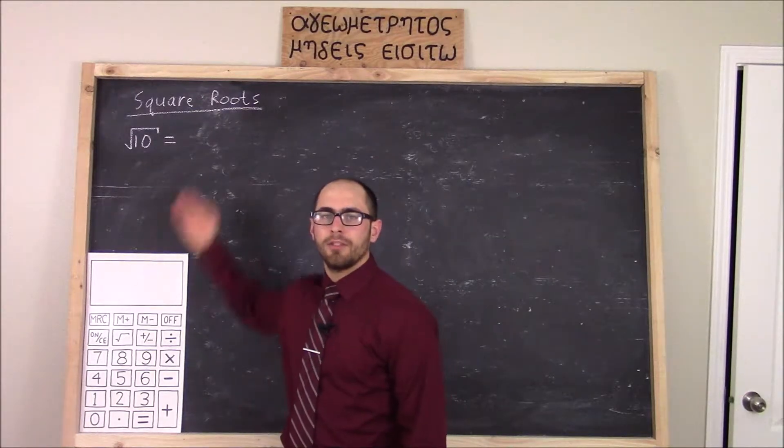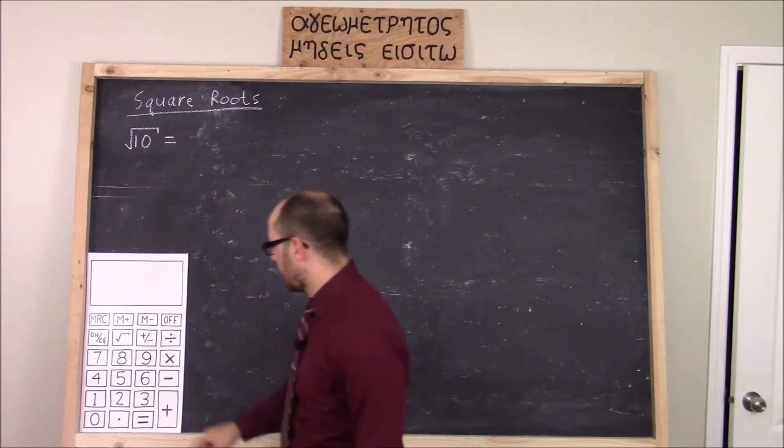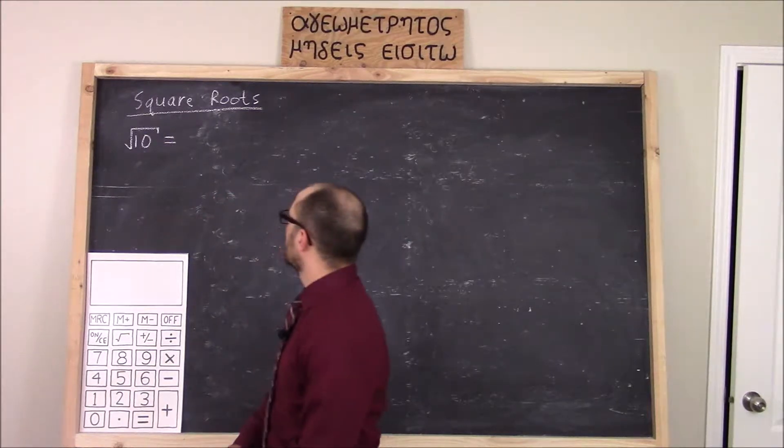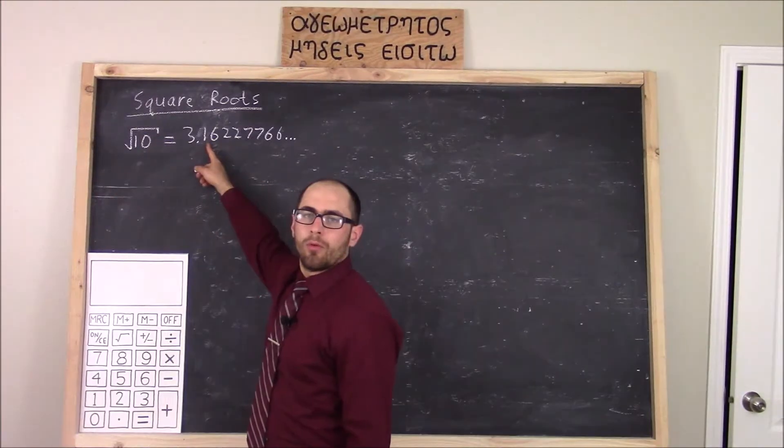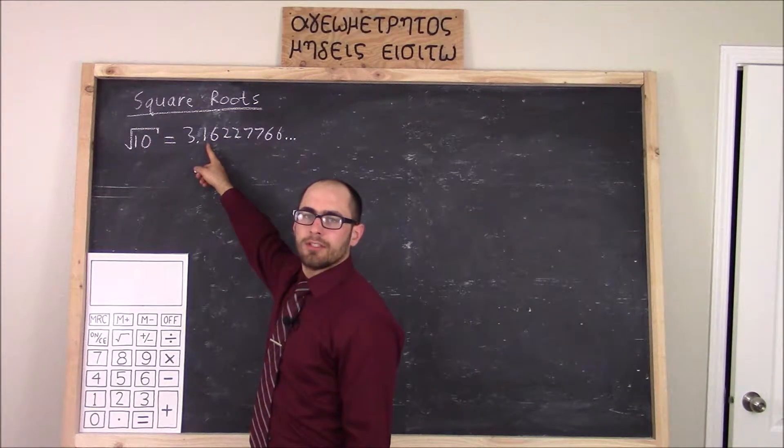For example, I find the square root of 10 by typing in 1 0 square root, and that spits out 3.16227766.